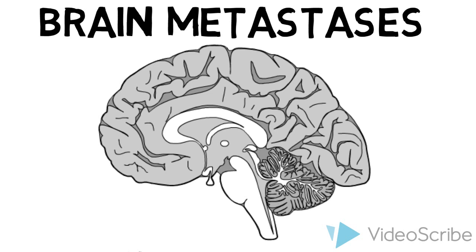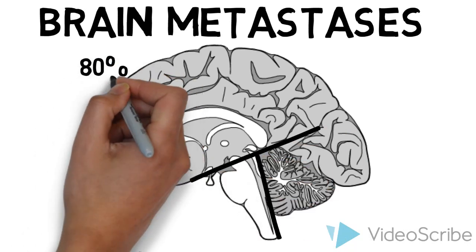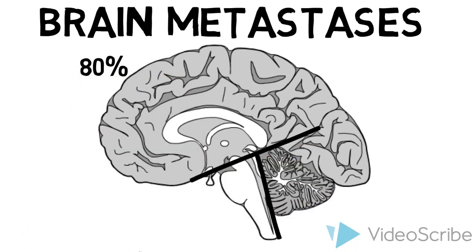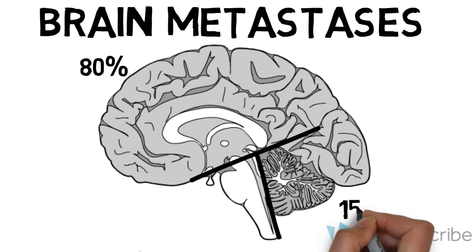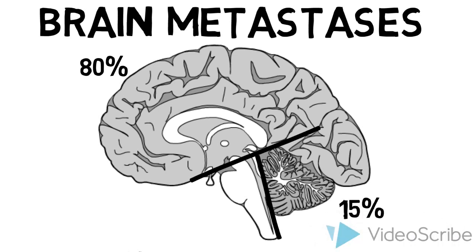The distribution of brain metastases roughly corresponds with the amount of blood flow received by each part of the brain, with roughly 80% going to the cerebral hemispheres, 15% going to the cerebellum, and 5% going to the brainstem.